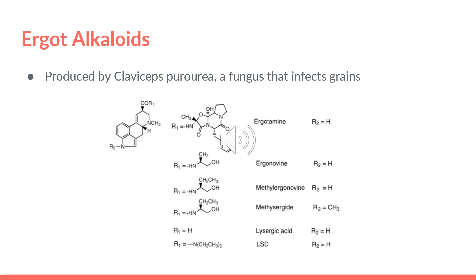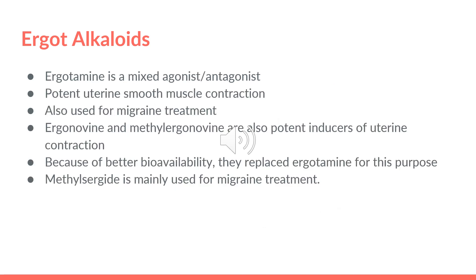Finally, we have the ergot alkaloids. They are produced by Claviceps purpurea, which is a fungus that infects grains. Ergotamine is a mixed agonist-antagonist. It is also a potent uterine smooth muscle contractor and is used for migraine treatment. For ergonovine and methylergonovine, they are also potent inducers of uterine contraction. Because of better bioavailability, they replaced ergotamine for this purpose. And finally, methysergide is mainly used for migraine treatment.